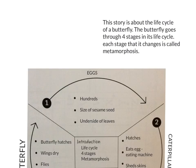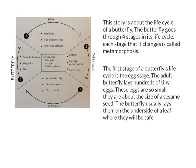Now I'm going to start writing my second paragraph about the egg stage. I'm going to tell the reader about the egg stage — how there are hundreds, they are the size of a sesame seed, and they lay them on the underside of leaves. Here's my second paragraph: 'The first stage of a butterfly's life cycle is the egg stage. The adult butterflies lay hundreds of tiny eggs. These eggs are so small they are about the size of a sesame seed. The butterfly usually lays them on the underside of a leaf where they will be safe.'